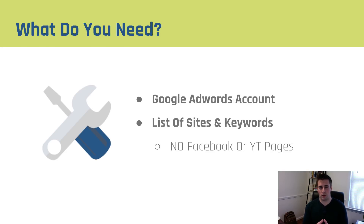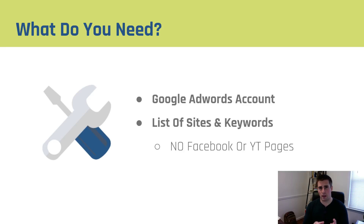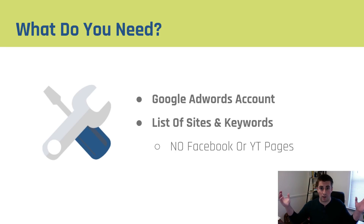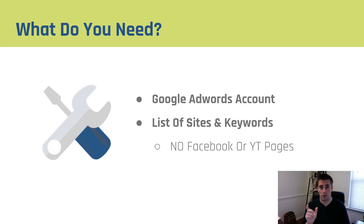So what do you need to create these custom intent audiences? You need a Google AdWords account and a list of sites or keywords that qualify what the person is looking for. One caveat: if you know that people in the market for your product look at particular Facebook or YouTube channel pages, rather than posting the Facebook or YouTube URL into the tool, you want to click on the blog or website associated with it and use that. If you use the Facebook or YouTube page you'll actually be pulling data from platforms with collectively over 3 billion users, which is not very helpful. Focus on the unique website of that particular channel or page.